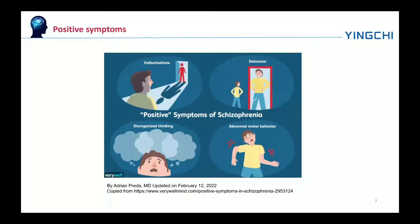Hallucinations are typically related to the content of the delusion theme. Delusions are bizarre in nature and involve distortions of self-experience, such as feeling as if one's thoughts or feelings are not really one's own, or believing that thoughts are being inserted into their mind, sometimes termed passivity phenomenon. Positive symptoms generally respond well to medication and become reduced over the course of the illness, perhaps related to the age-related decline in dopamine activity.